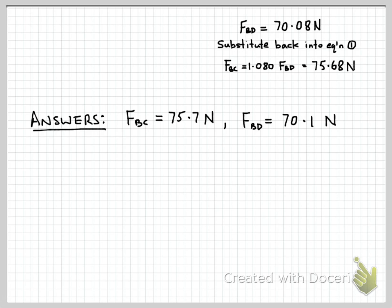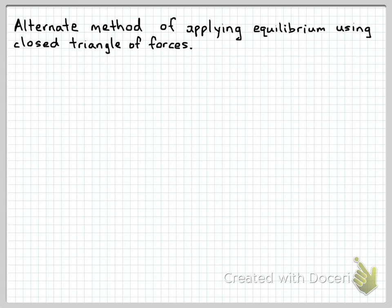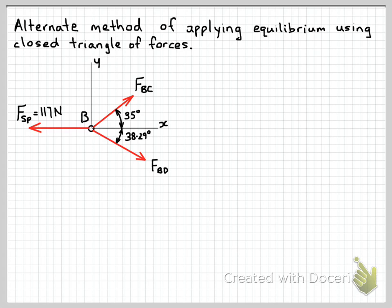We should also check our calculations. I'll redo the problem using the vector diagram method and the vector equation of equilibrium. In this method, we apply the vector equilibrium equation and draw a vector diagram which results in a closed triangle of forces, since the sum of the forces equals zero. Note that even using this method, you must still draw the free body diagram and write the equations of equilibrium — in this case the vector form — to justify what we do next.